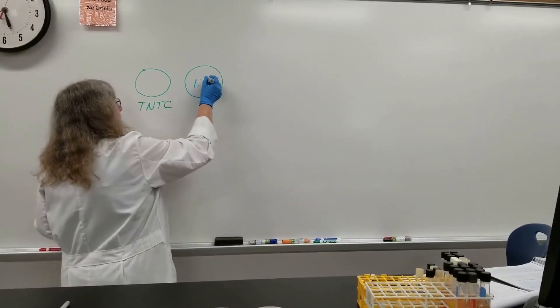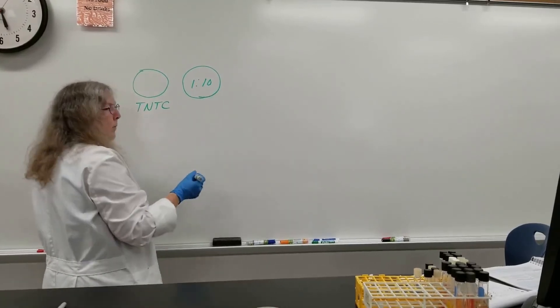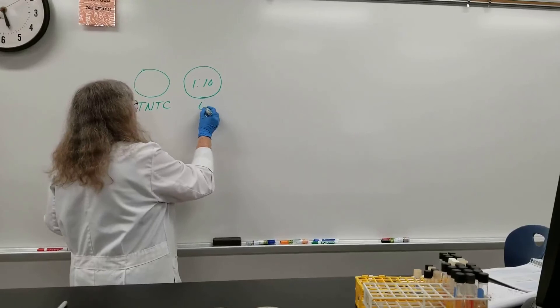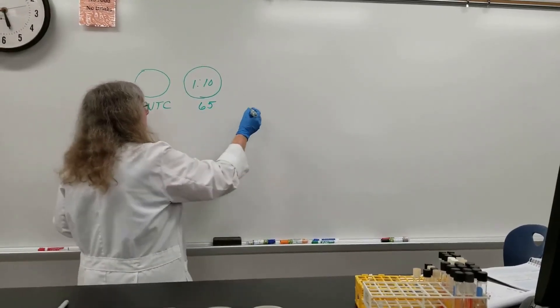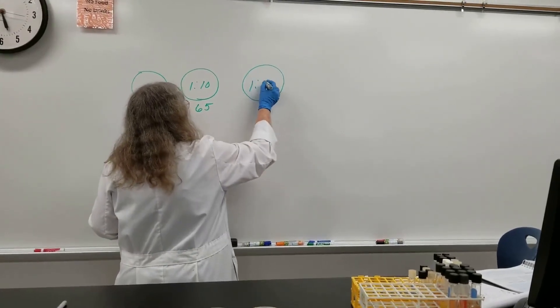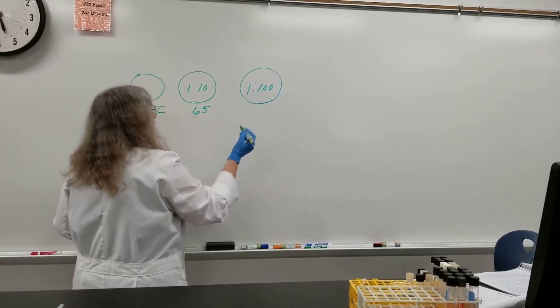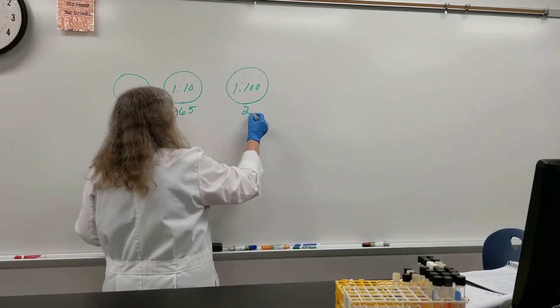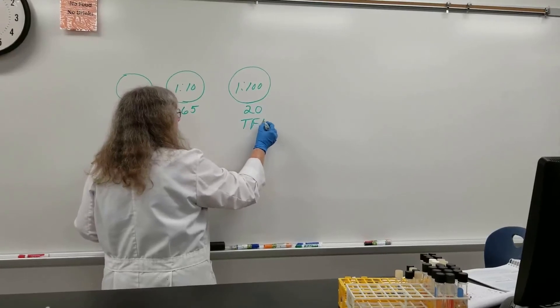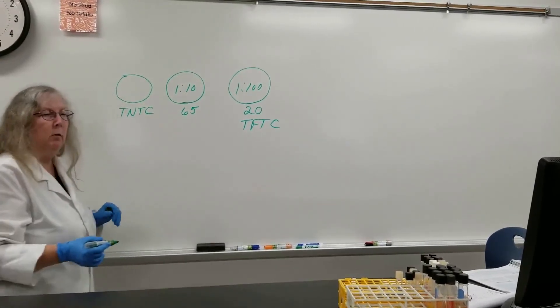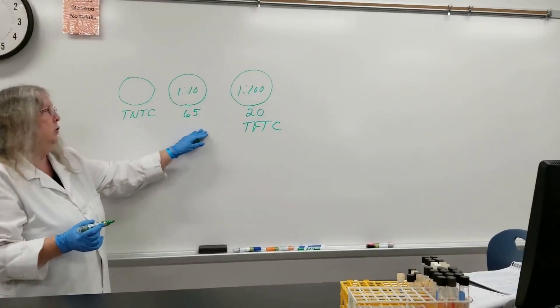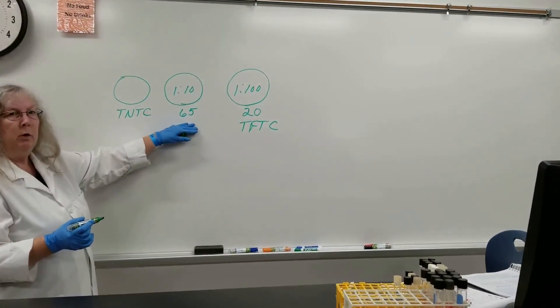Now this plate was a 1 to 10 dilution and we previously counted this plate and had 65 colonies on it. The 1 to 100 plate only had 20 colonies on it. This will sometimes be recorded as TFTC, too few to count - it's less than 30. So we were able to hit, with our dilution, hit this range of between 30 and 300.